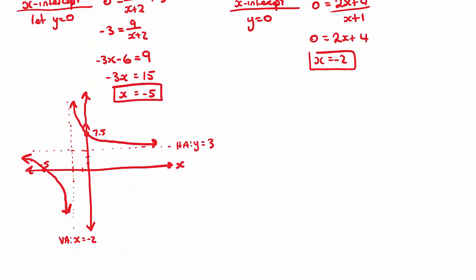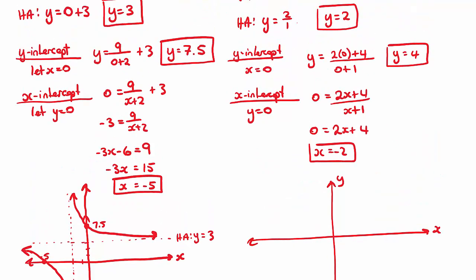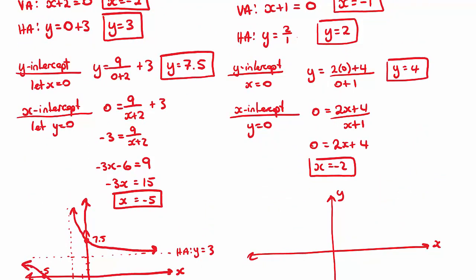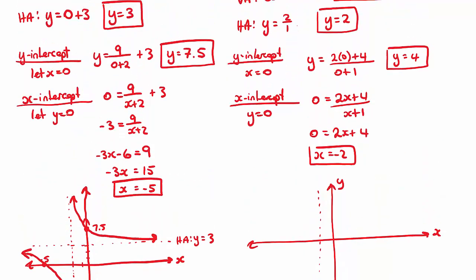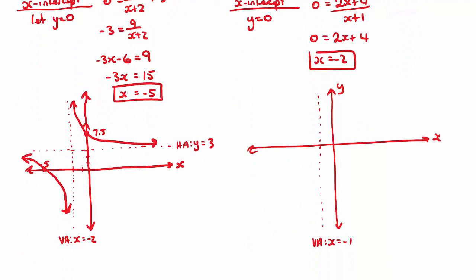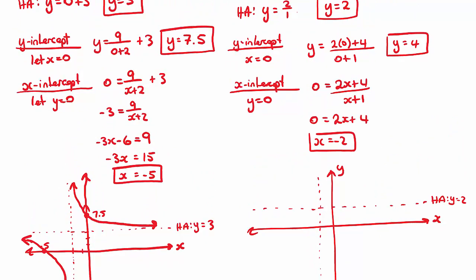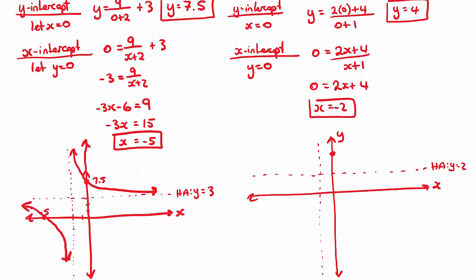Now we sketch the second example. We draw dotted lines for the vertical asymptote at X equals negative 1 and the horizontal asymptote at Y equals 2. We plot the Y-intercept at 4 and the X-intercept at negative 2, then sketch the curve passing through those intercept points while asymptoting toward the dotted lines.